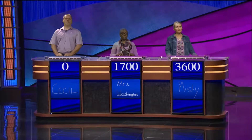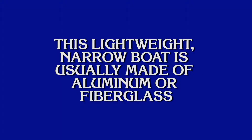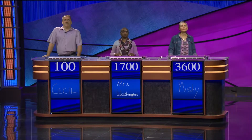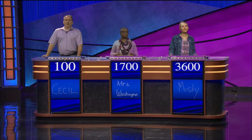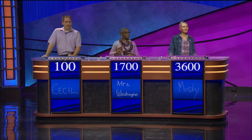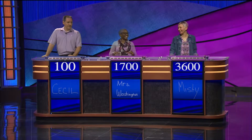You have the board still. O Before E for $100, please. This lightweight, narrow boat is usually made of aluminum or fiberglass. What is a canoe? Correct. Blankoff for $200: This term can be used to describe a television show that branches off of another television show. What is spinoff? Correct.